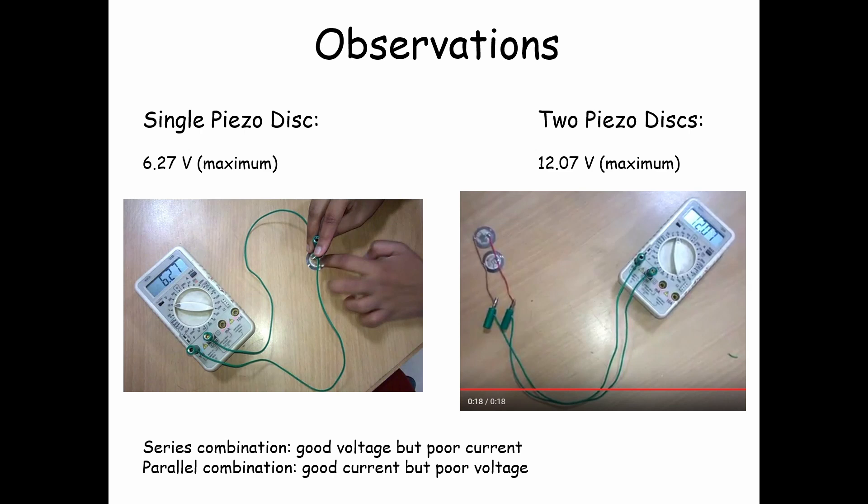Here are my observations. A single piezo disc generated about six volts, and two piezo discs generated about twelve volts when used in a particular combination. Series combination is good for voltage and parallel combination is good for current. In my setup, I used six piezo discs — three in series, which is in parallel with another set of three in series.